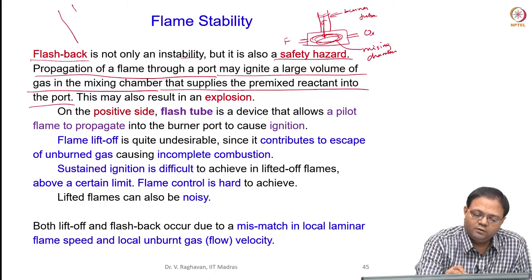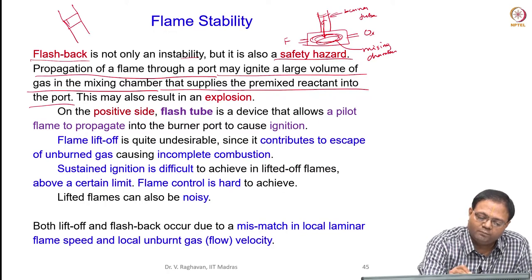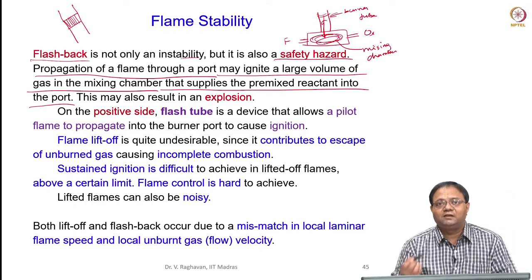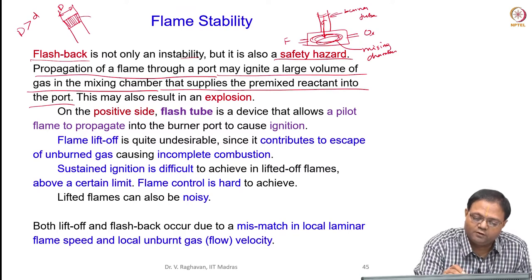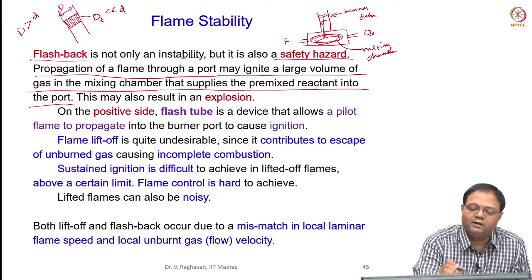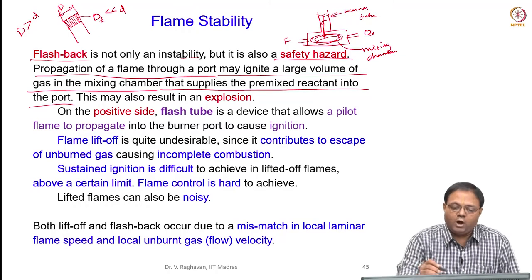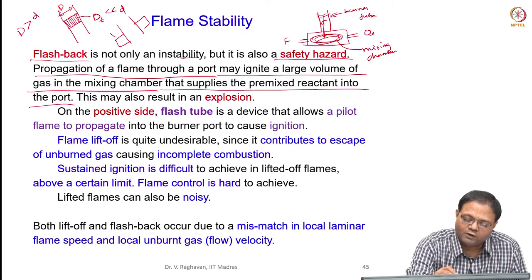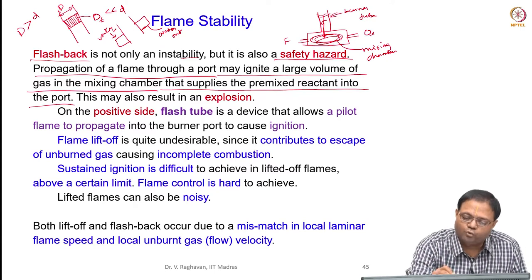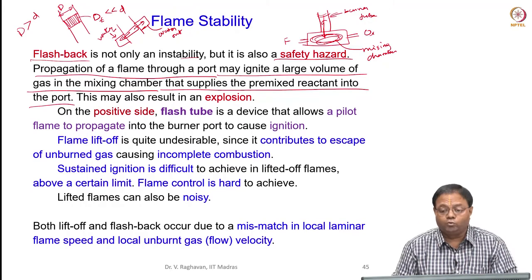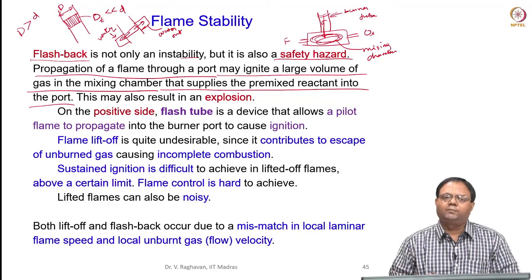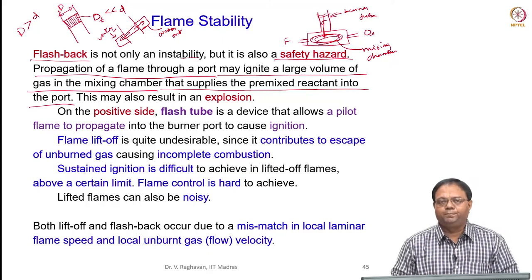Unless we provide a flame arrester — a bank of tubes where the diameter of each tube is less than the quenching distance — the flame cannot propagate beyond that, or you increase the heat loss. You put a bank of tubes at the burner port; these tubes have diameters much less than the quenching distance (D_tube << D_quenching). This will not allow the flame to propagate. Alternatively, you cool the burner tube by supplying water — the flame coming to this cooled point will lose more heat and quench.